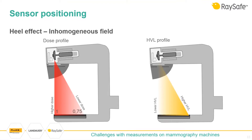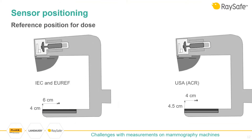You have the same but opposite effect for HVL. The reference position for dose varies around the world. EUREF says that dose position should be at 6 centimeters from the chest wall side and 4 centimeters up from the examination table, while in the US, MQSA says you measure 4 centimeters from the chest wall side at 4.5 centimeters height. Dose measured at a different height can be recalculated using the inverse square law, but the distance from the chest wall side has to be at the reference distance — it's not easy to recalculate afterwards.